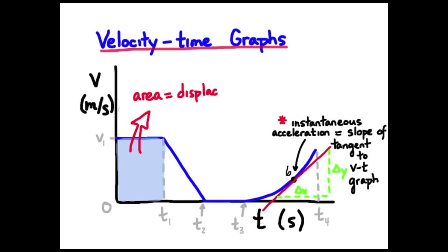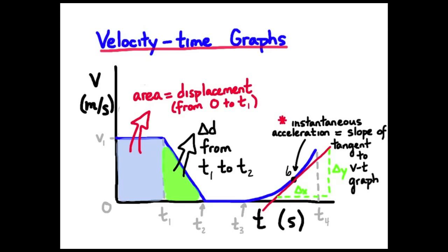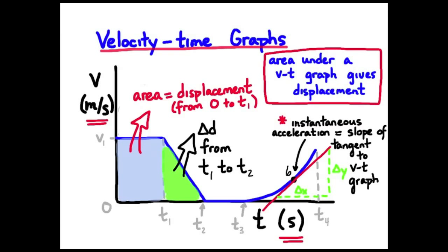There's more information we can get from a VT graph. If we measure the area under the curve from the curve to the T axis, we get the displacement. The light blue area would be the displacement from zero to T1, and light green represents how far the object has moved from time one to time two. In general, the area under a VT graph gives us displacement. Rectangle area is length times width: the Y direction in meters per second times width in seconds gives units of meters per second times seconds — which is meters, which is displacement.